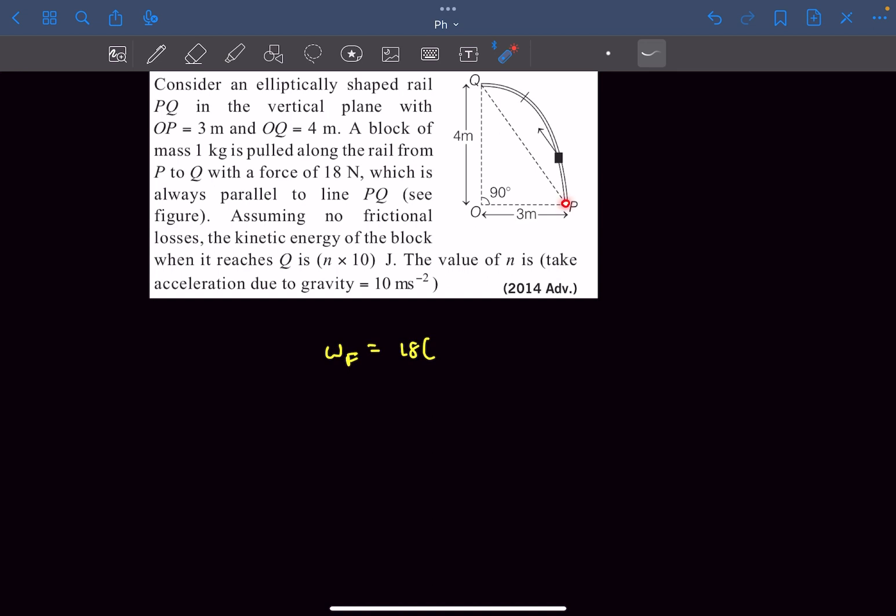In the direction of the force F, the displacement of the block is PQ, and PQ from this right triangle is going to be 5. So the work done by the force F is 90 joules. Now the other force that is acting on the block is the mg force.